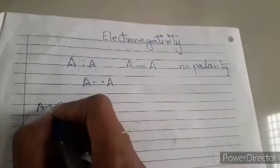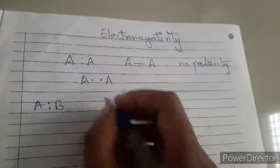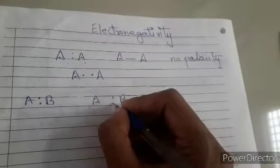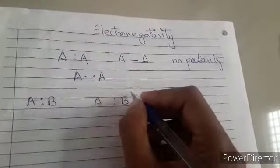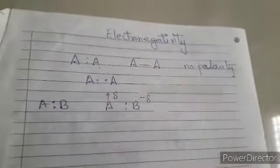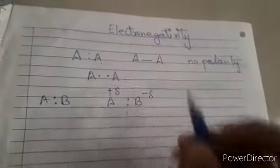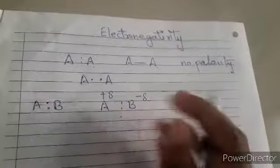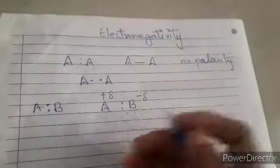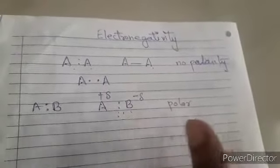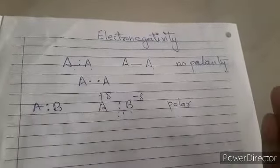But if you come across a covalent compound in which both atoms are different, then the atom which is more electronegative in nature will cause the electrons to drift or shift towards it. There will be a partial negative charge and a partial positive charge developed. In a pure covalent compound both atoms were same and electrons equally distributed, but here electrons are unequally distributed — one is more electronegative, one is less — so they are polar.